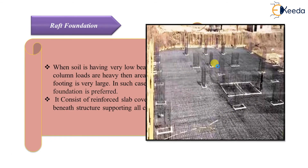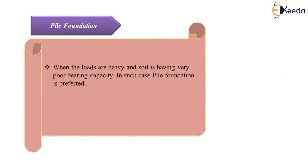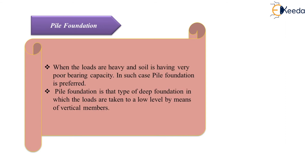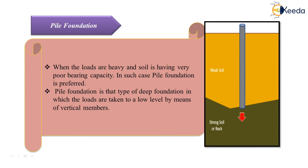The next type is pile foundation, which is one of the types of deep foundations. Pile foundations are used when the loads are very heavy and the soil has very poor bearing capacity. It is a type of deep foundation in which loads are taken to a lower level by means of vertical members. A vertical pile is inserted into the ground down to the strong soil having good bearing capacity. This was the introduction to the various types of footings.